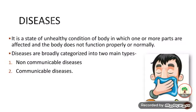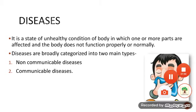Now we will discuss diseases. A disease is a state of unhealthy condition of the body in which one or more parts are affected and the body does not function properly or normally. Diseases are broadly categorized into two main types: non-communicable diseases and communicable diseases. Non-communicable means it is not contagious and does not spread through contact, but communicable disease is a contagious disease.